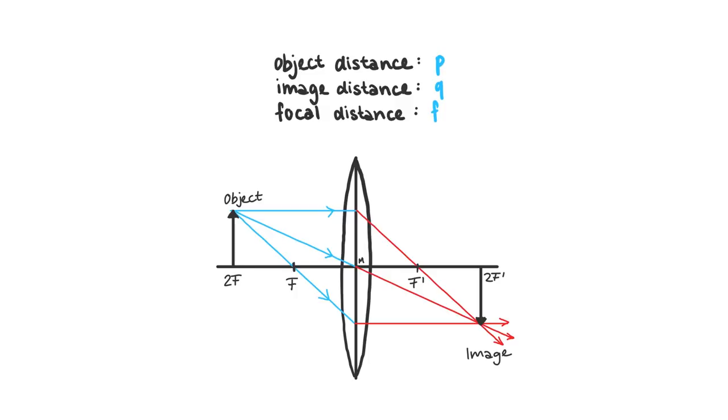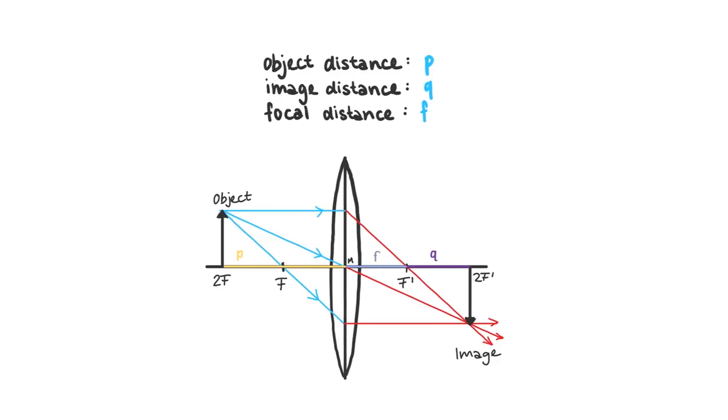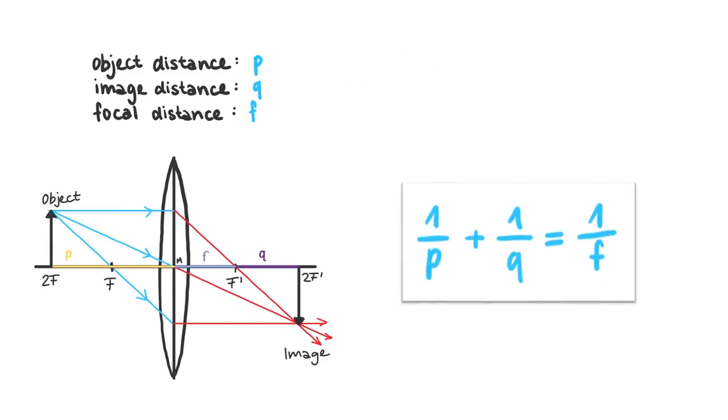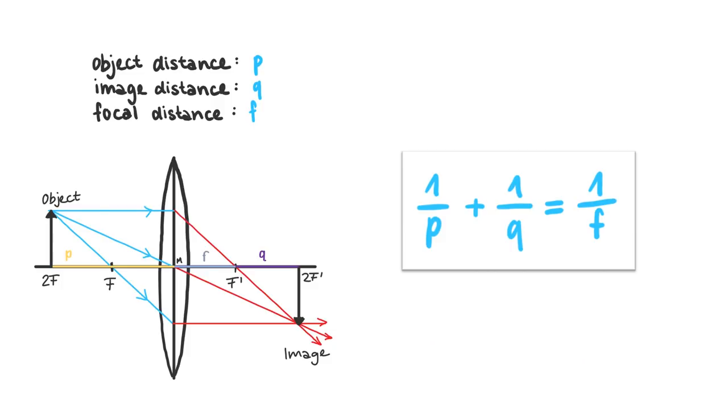As for the lens equation, we'll begin with the definition. Lowercase p is what stands for the distance from the center of the lens to the object. Lowercase q is what we call the distance between the image and the center of the lens. You already know the focal distance, f. The equation itself is 1 over p plus 1 over q equals 1 over f.